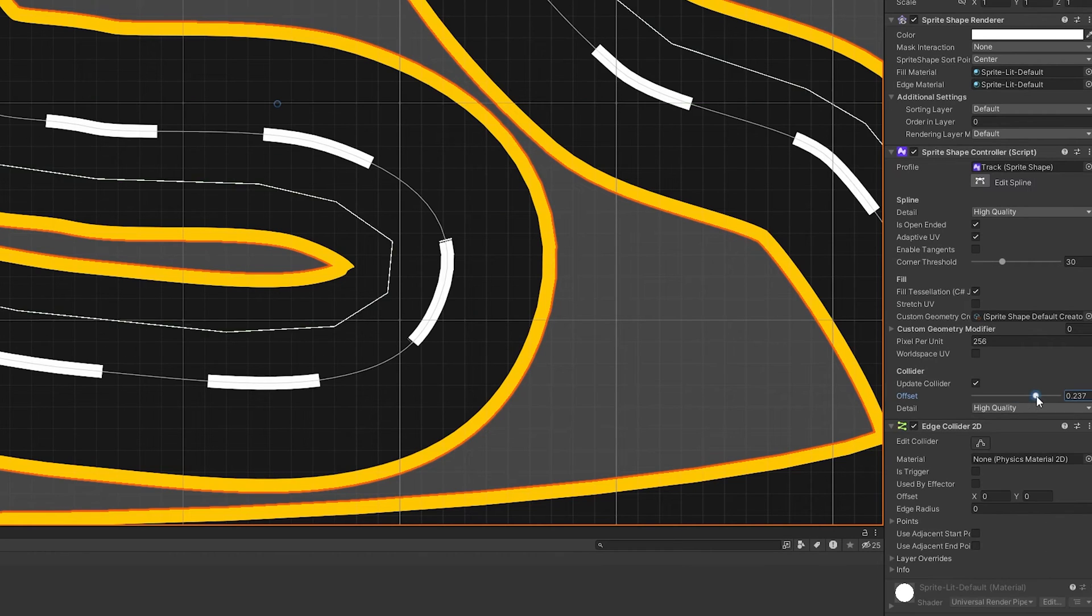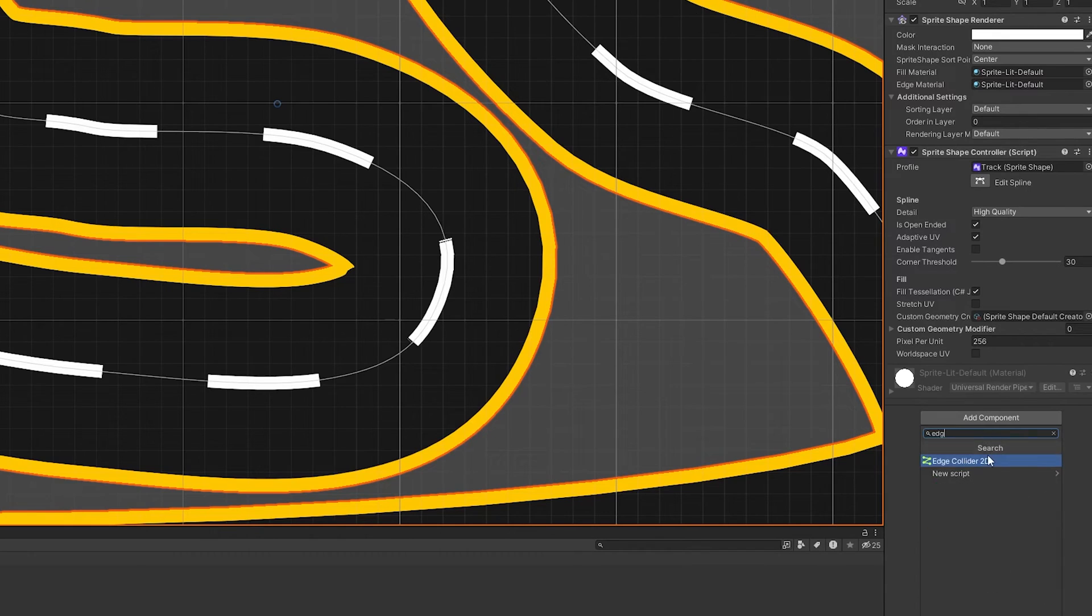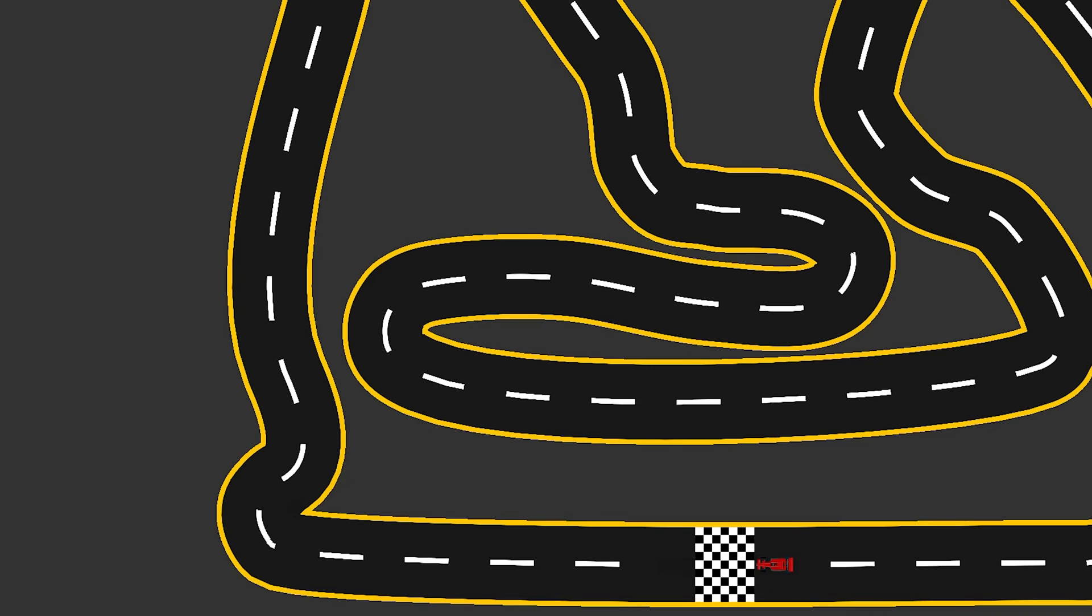So let's add some colliders on the edges of the road and make it so that if I touch them, I die. Now, let's give this another go. Great.